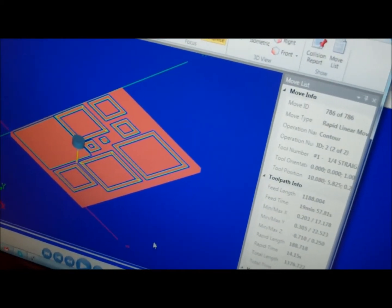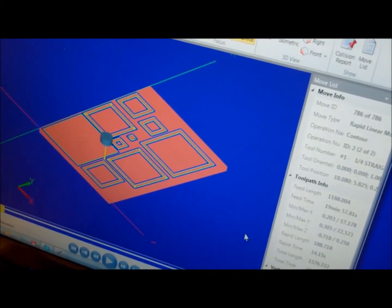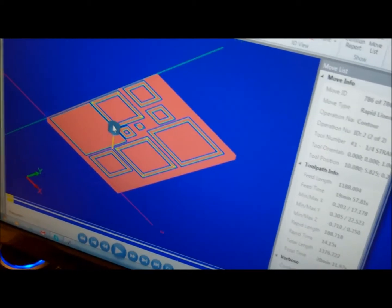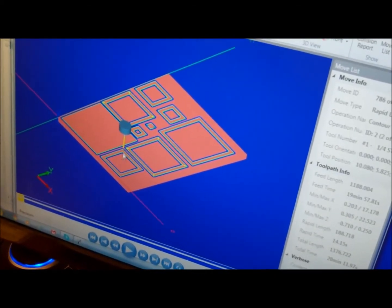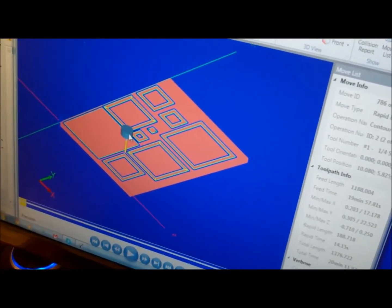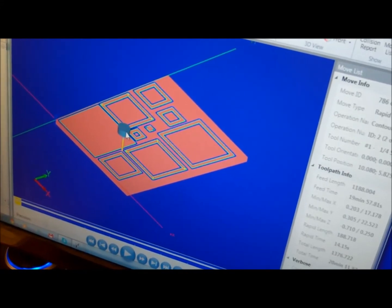And then from there, we've got to turn it into numeric code, which is really the same thing as Cartesian coordinate systems. So let's go ahead and turn it, program it into the code.